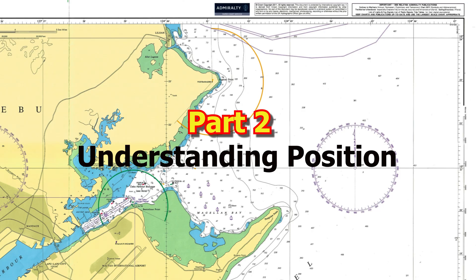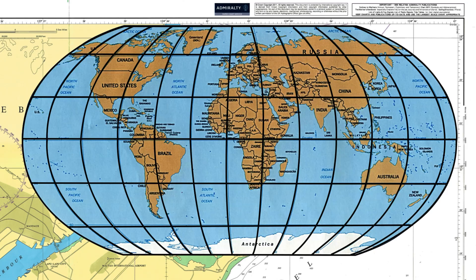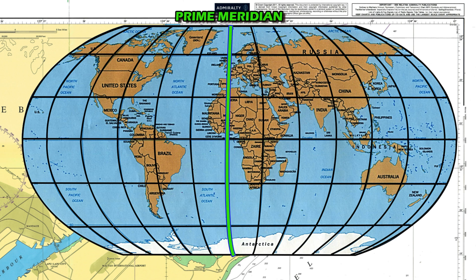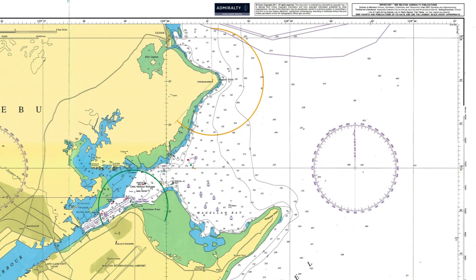Part 2: Understanding position. A ship's position is usually given in latitude and longitude. Latitude tells us how far north or south we are from the equator. Longitude tells us how far east or west we are from the prime meridian. On a nautical chart, these are shown on the edges: latitude is marked along the sides of the chart, and longitude is marked along the top and bottom.